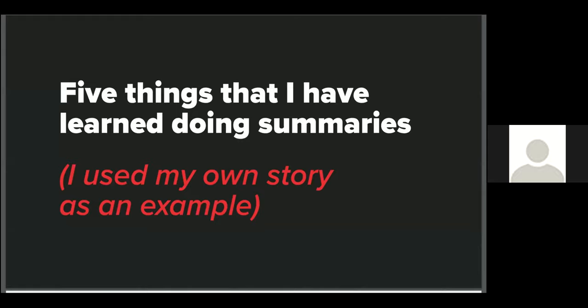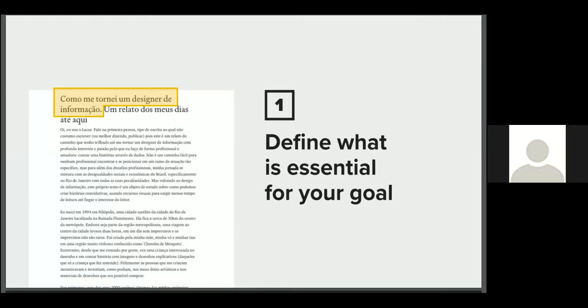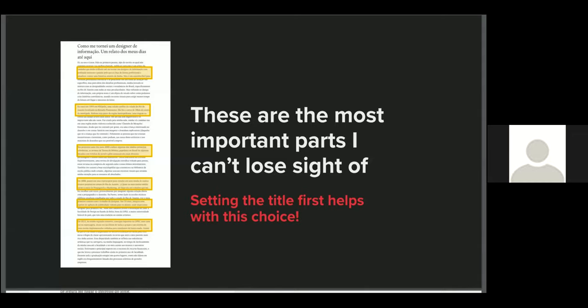So, I brought five tips that I learned during my job and I share with you and I use my own history like an example and this is my hard text, a large text book about my life story and here I go with my first tip. It is defining what's essential in your goal and the title can be your reference. I frankly think to myself, I can't lose sight in this title because it will guide my choice and I select another phrase in my text, my highlights and from these highlights I get my second tip.